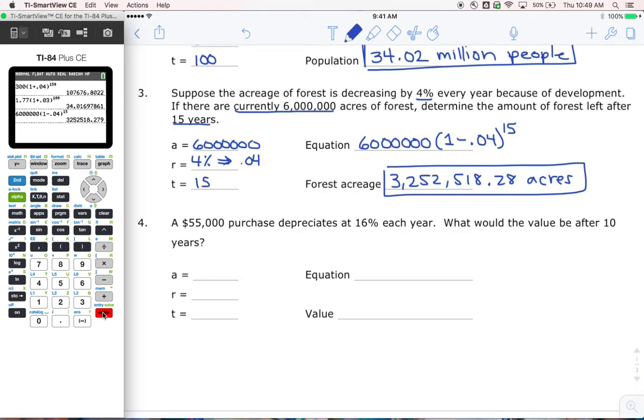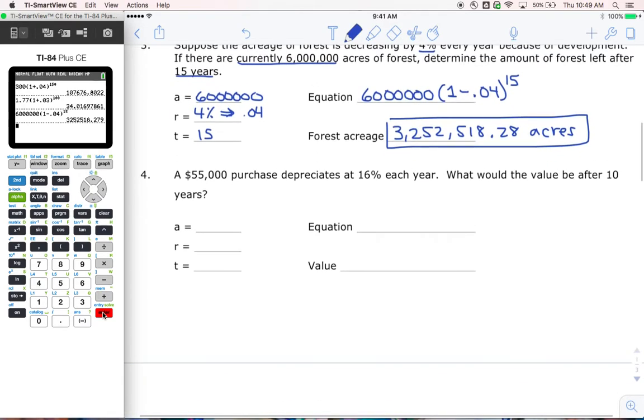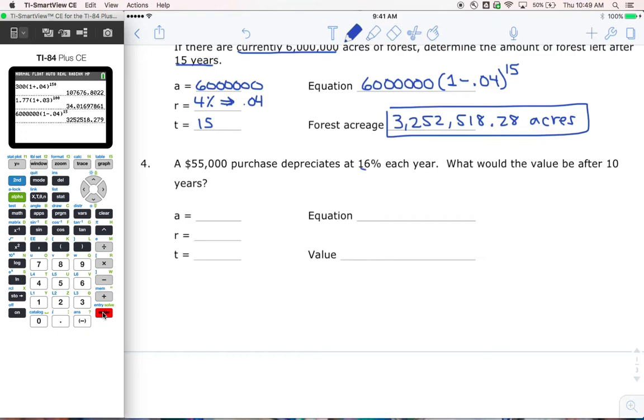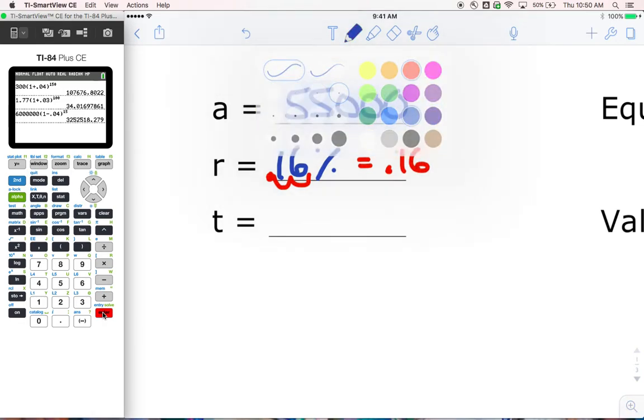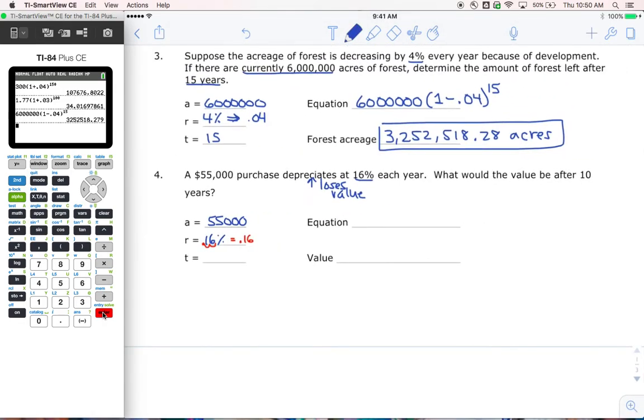Finally, problem number four. A $55,000 purchase depreciates at 16% each year. I don't know if you know this, but depreciates means loses value. What would the value be after 10 years? So A is 55,000, my initial amount. My rate is 16%. This time we're not going to have a zero, because if I move this decimal two places, it ends up right here, so my decimal here is 0.16. And then it's asking how many years later? 10 years. So T is 10.